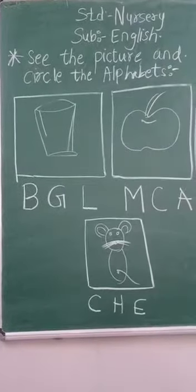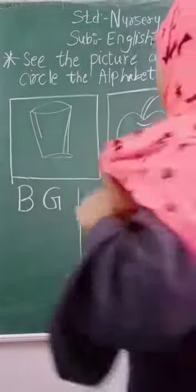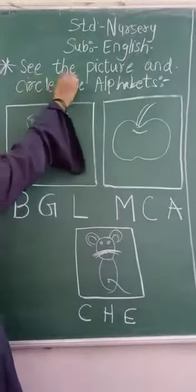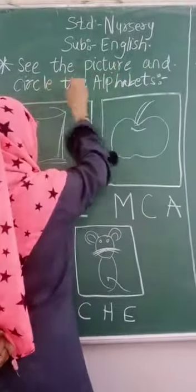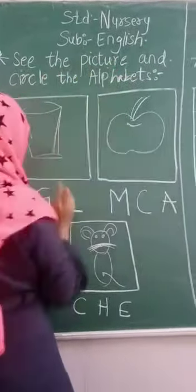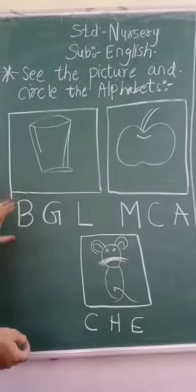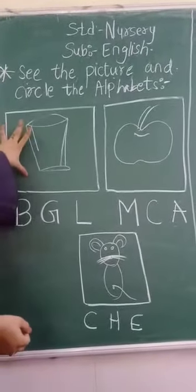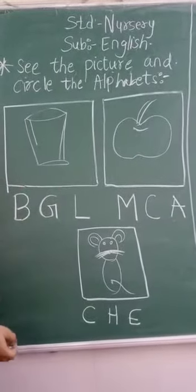Hello and welcome to your online class for Nursery. The subject is English and the topic is 'See the Picture and Circle the Alphabet.' You have to look at the pictures and circle the alphabet.